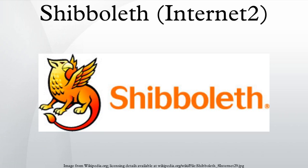The user is redirected to either their home IDP or a WAYF service, where they select their home IDP for further redirection. The user authenticates to an access control mechanism external to Shibboleth. Shibboleth generates a SAML 1.1 authentication assertion with a temporary handle contained within it. This handle allows the IDP to recognize a request about a particular browser user as corresponding to the principal that authenticated earlier.